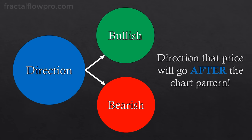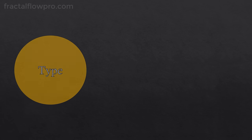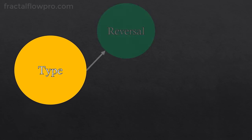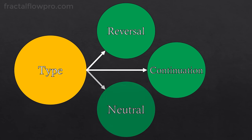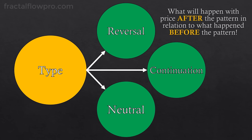Beyond the direction classification, we also have another type of classification that adds on top of the first one, which is the type. There are three types of chart patterns: the reversal patterns, the continuation patterns, and the neutral patterns. The type classification tells what's going to happen with price after the pattern in relation to what was happening with price before the pattern.